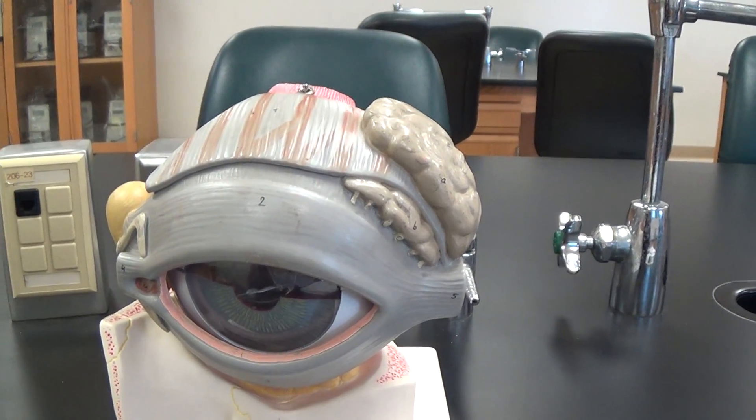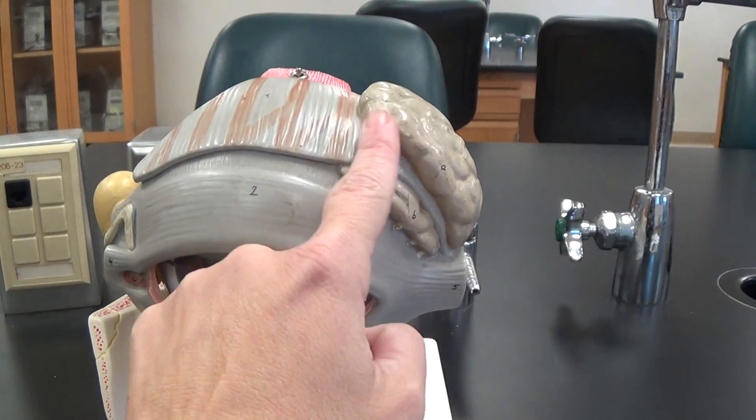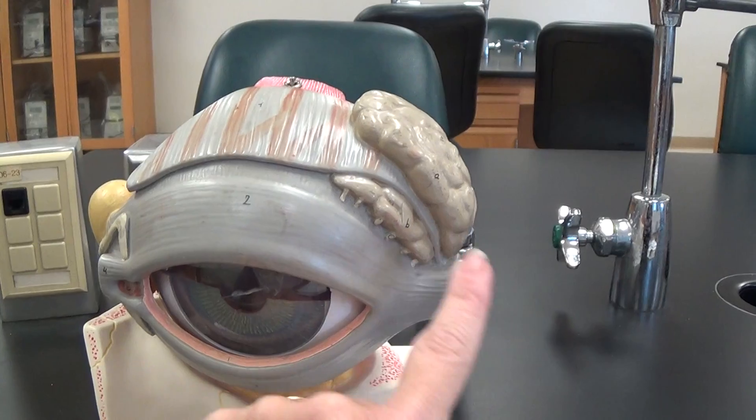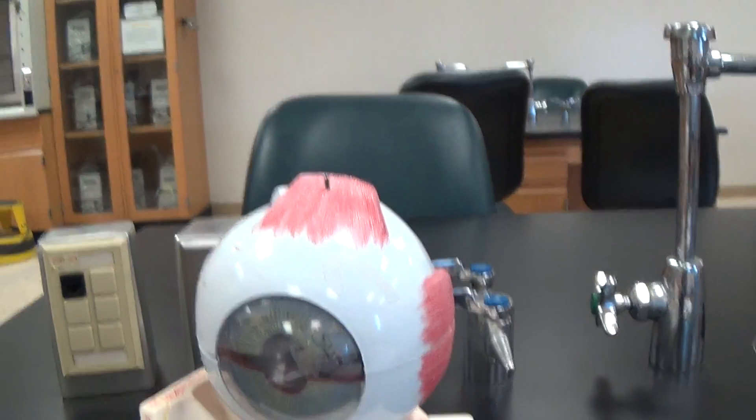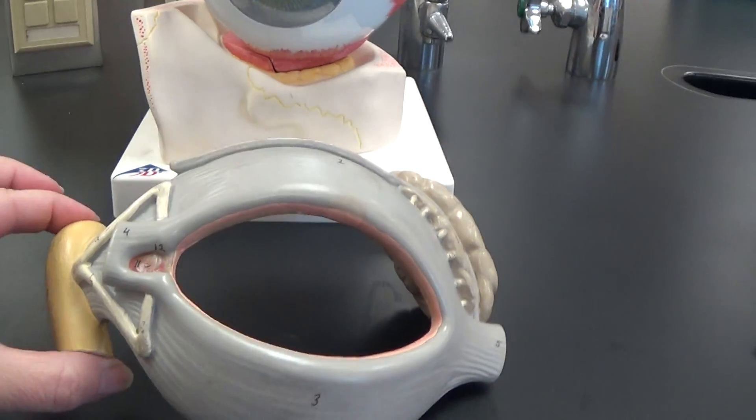This is the eye model, and this gray part is the part we'll focus on first. Here we have the lacrimal gland or lacrimal apparatus. This will produce tears that wash into the surface of the eye, wash across, and then drain out through here.